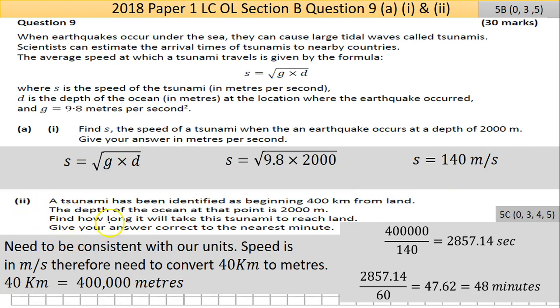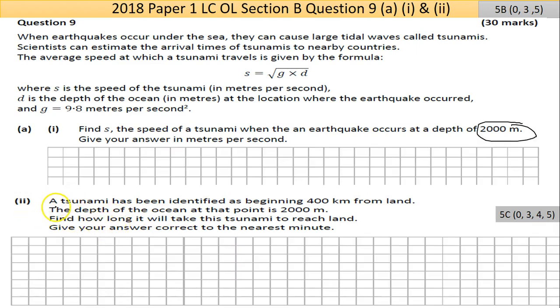Part two here says a tsunami has been identified as beginning 400 kilometers from land. The depth of the ocean at that point is 2,000 meters. Find how long it will take the tsunami to reach land. Give your answer correct to the nearest minute. The problem I see straight away is that kilometers and meters are the same type of units, both SI units, but they're different in their quantity.